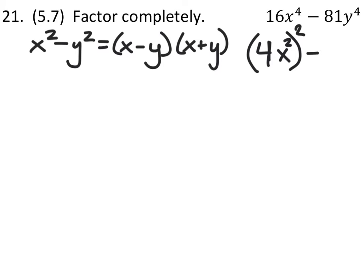And we'll subtract this from 81 is 9 squared, and y to the 4th is y squared squared. So we can square both of these quantities, and now we can use the difference of squares property.